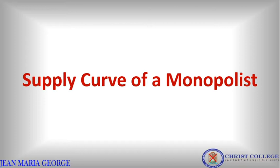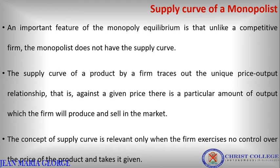Dear students, today we are going to study about the supply curve of a monopolist. We have been discussing different aspects of a monopoly market situation. We have already covered the long run equilibrium as well as the short run equilibrium cases. Now let us look at the supply curve — what is the supply curve of a monopolist, or is there even a supply curve for a monopolist? An important feature of monopoly equilibrium is that, unlike a competitive firm, the monopolist does not have a supply curve.